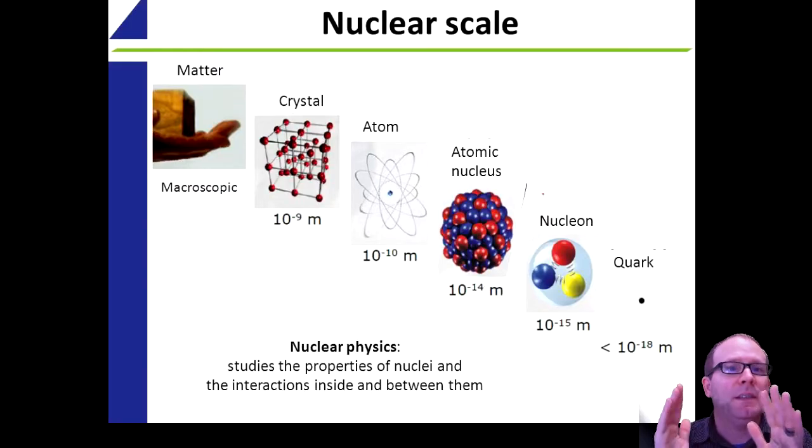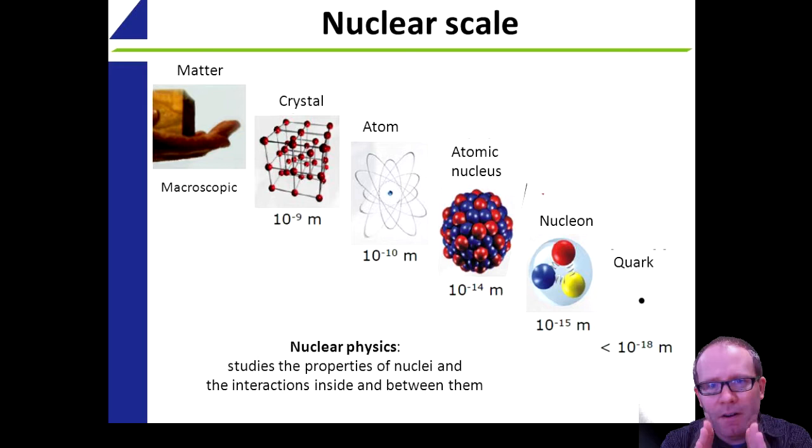By quantum level, physicists mean the very small, very fundamental scales of the universe. If you take any matter that we interact with on a daily basis and you keep breaking it down into smaller pieces, you eventually reach the level of the atom. Atoms are further broken down into electrons flying around the outside with protons and neutrons inside the central nucleus. The reason we call this the quantum level is because when you examine the physical behavior of these subatomic particles, two very strange things begin to happen.